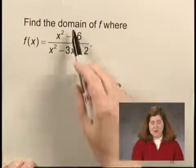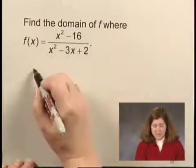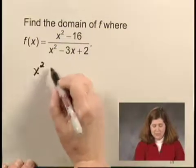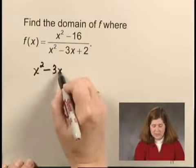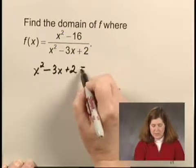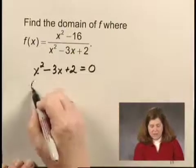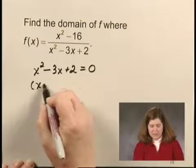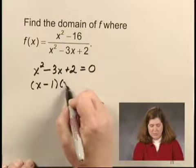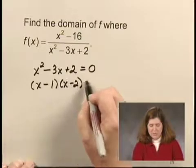So in order to find the domain of f, we start by setting the denominator equal to 0 and solving for x. To do that, since we have now a quadratic equation, we need to factor. This would be x minus 1 times x minus 2 equals 0.